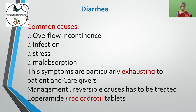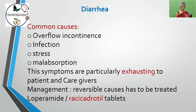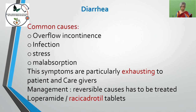Another commonly found symptom is diarrhea, which is usually because of overflow incontinence. Due to chronic constipation, stool becomes impacted and remains in place, while newly formed stool passes around it, giving the feeling of incontinence or diarrhea. It may also be because of infection, stress, or malabsorption syndrome. The reversible cause should be treated first, and appropriate antibiotics or loperamide have a role to play.